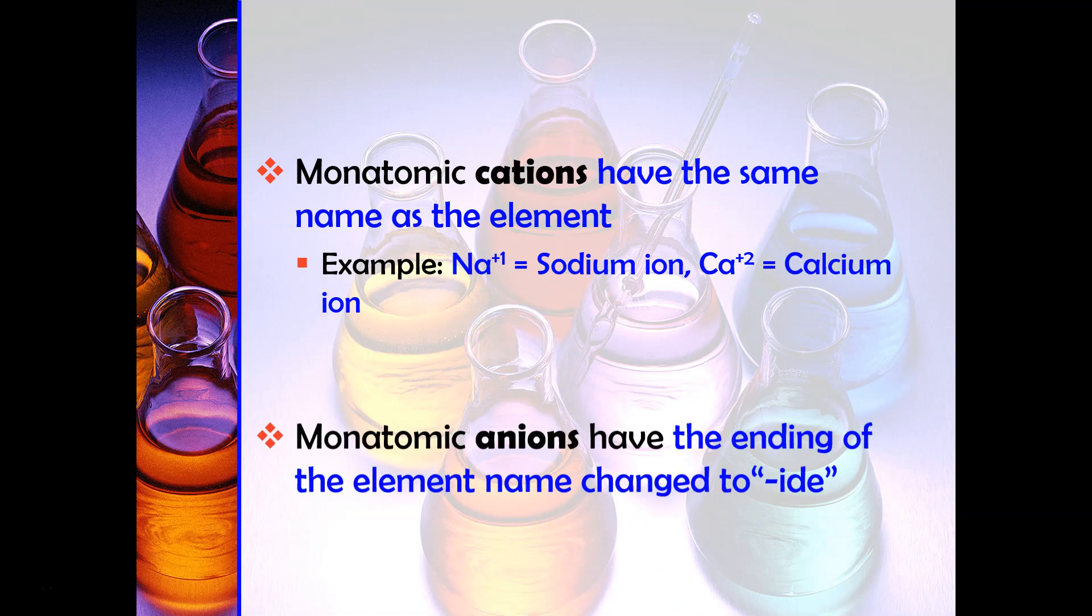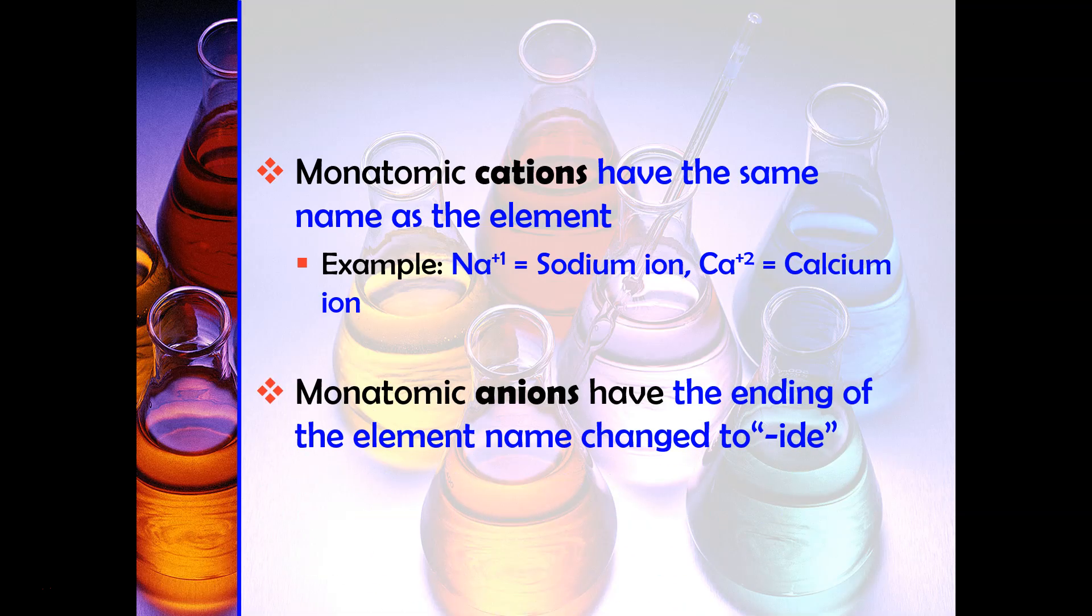Whenever you had a monatomic anion you changed the ending of the element to -ide. So you had to change the ending of the non-metals to -ide, for example chloride or oxide.